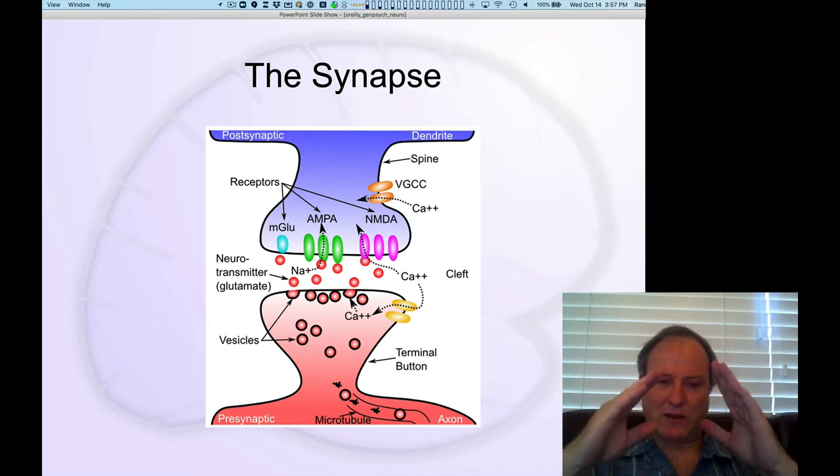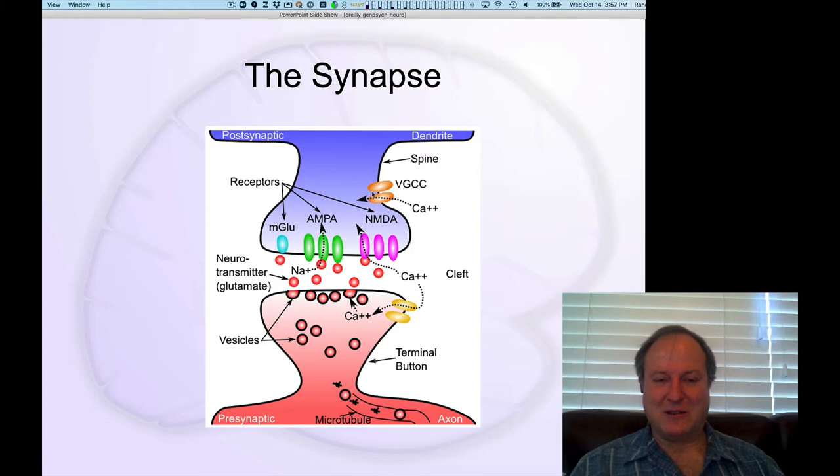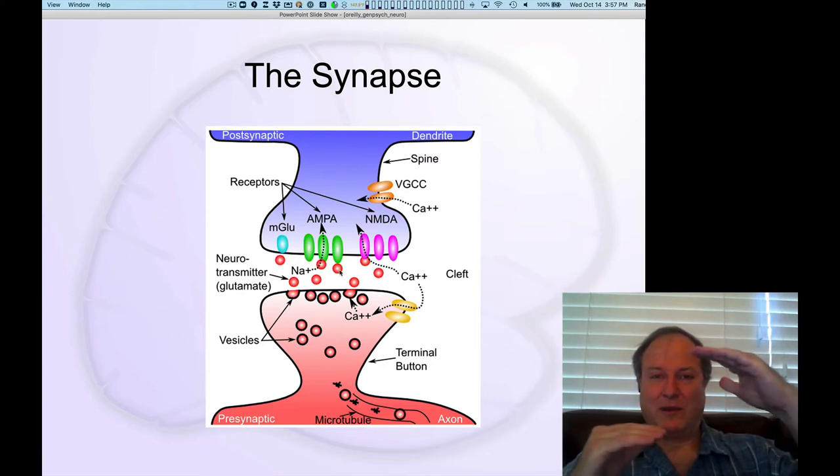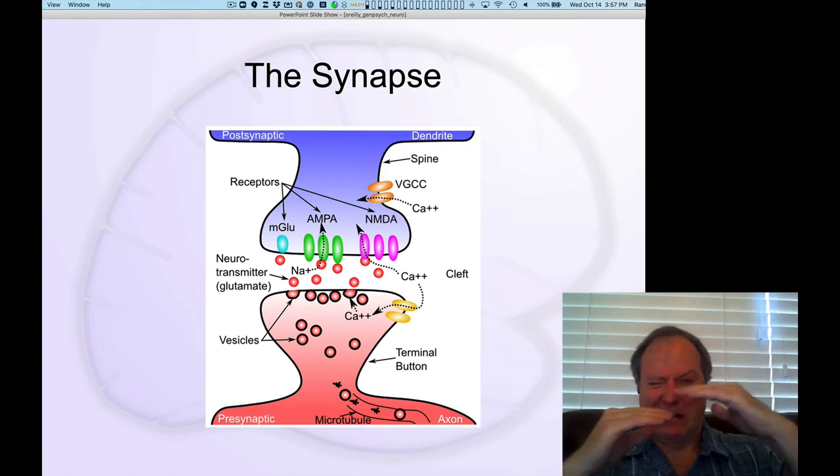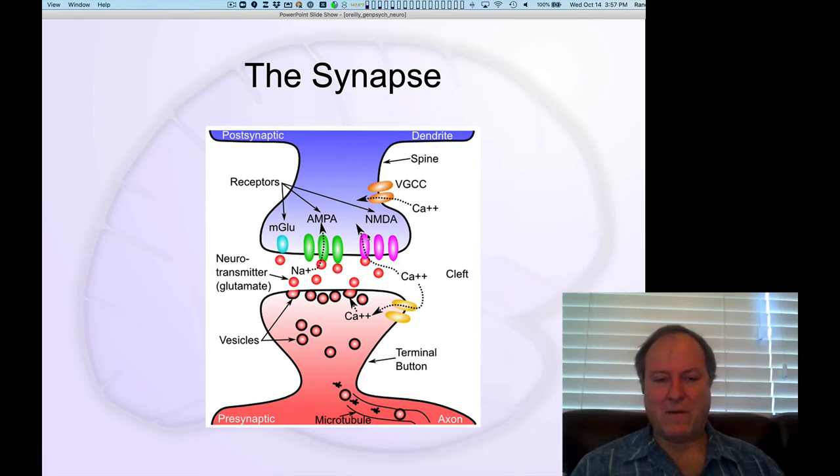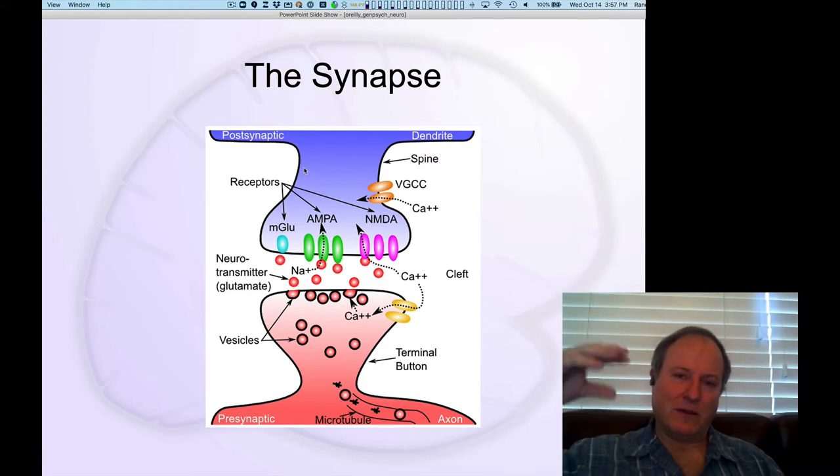And that pops out the juice, the neurotransmitter that's been sitting in these little sacks. It very quickly diffuses across this little synaptic cleft. These diagrams make that cleft look like a pretty big distance. It's actually a tiny microscopic distance. It doesn't have far to go. Then the neurotransmitter will bind to post-synaptic receptors on the other side. This is the receiving side. Those are the spines that we saw on the dendrites of the receiving neuron.